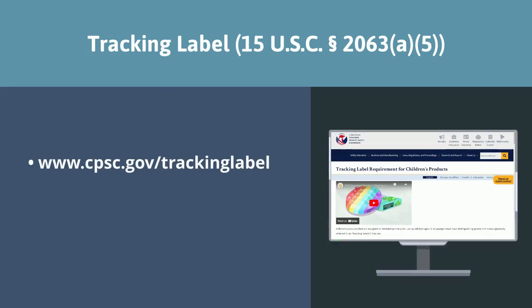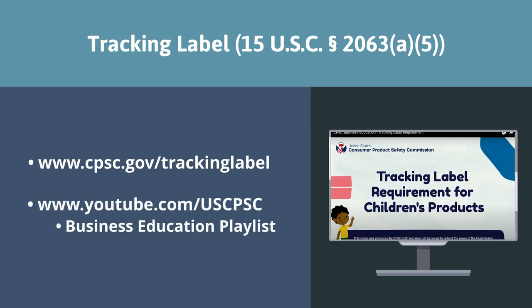Children's products and their packaging are required to have tracking labels. A tracking label is a distinguishing permanent mark that is affixed to the product and its packaging to the extent practicable and provides certain identifying information, including the manufacturer, importer, and/or private labeler, date and location of production, and a batch code or cohort information that helps identify the specific source of the product. To learn more about the tracking label requirement, please watch CPSC's tracking label requirement video by visiting CPSC's business education playlist at youtube.com/uscpsc.